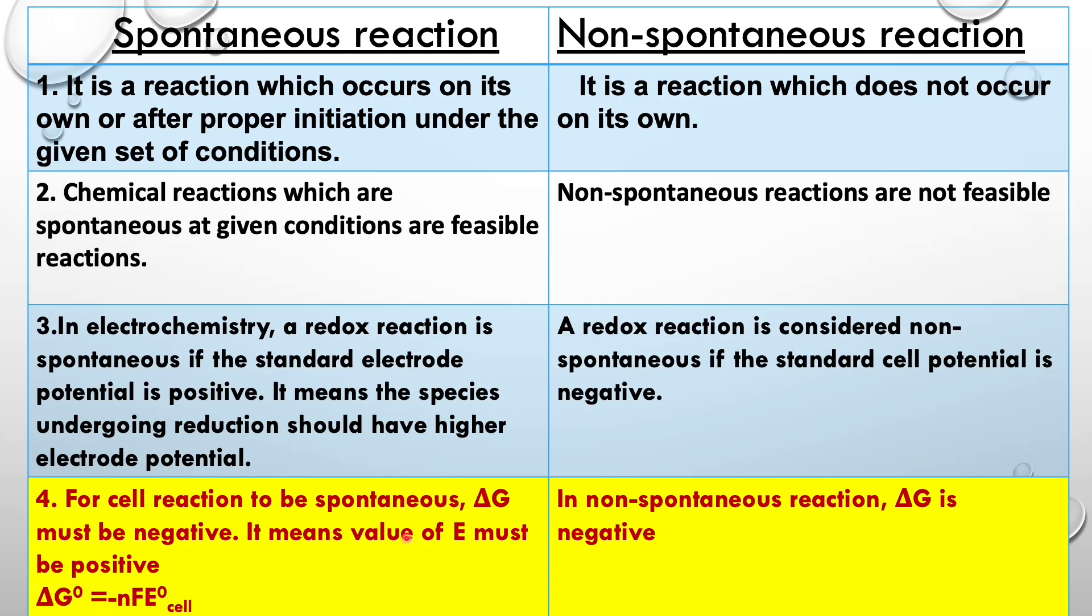For cell reaction to be spontaneous, ΔG must be negative. It means value of E electrode potential must be positive because ΔG° equals minus nFE° cell. But in non-spontaneous reaction, ΔG is negative.